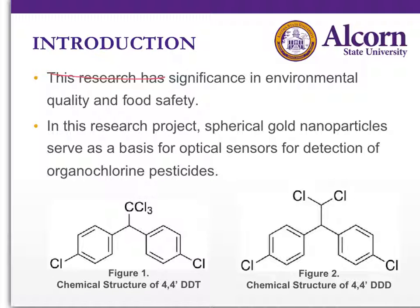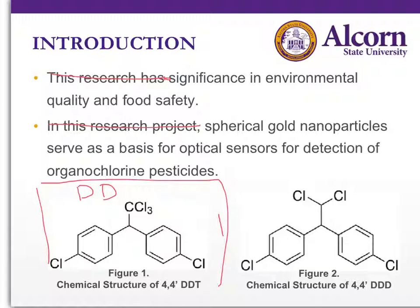Take out that and just bullet point the significance in environmental quality and food safety. Then just say spherical gold nanoparticles serve as a basis for optical sensors for detection of organochlorine pesticides. Put this in a box and label it DDT, or whichever one this is, and then put this one in a box and label it DDD.